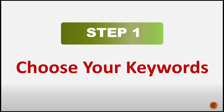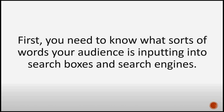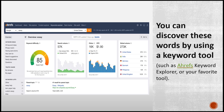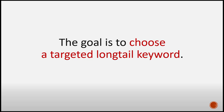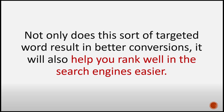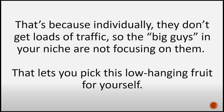Step 1: Choose Your Keywords. First, you need to know what sorts of words your audience is inputting into search boxes and search engines. You can discover these words by using a keyword tool such as Ahrefs Keyword Explorer or your favorite keyword tool. The goal is to choose a targeted long-tail keyword. Not only does this sort of targeted word result in better conversions, it will also help you rank well in the search engines more easily. That's because individually they don't get loads of traffic, so the big players in your niche are not focusing on them — that lets you pick this low-hanging fruit for yourself.